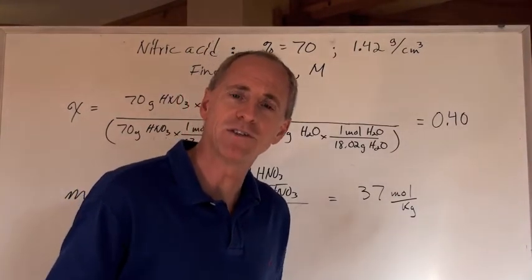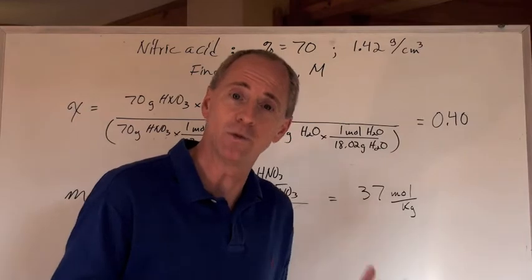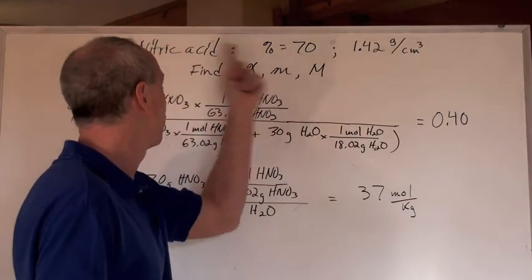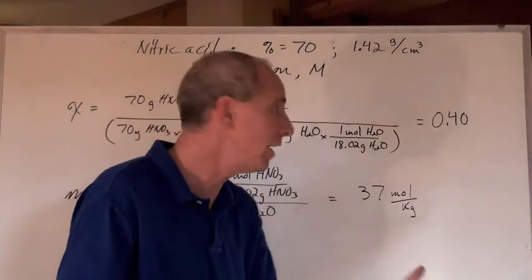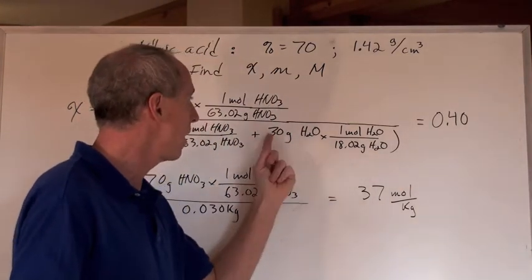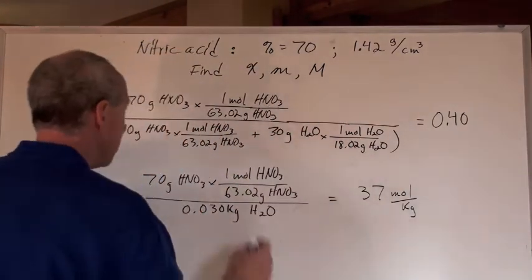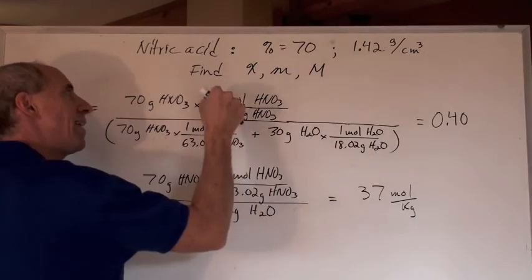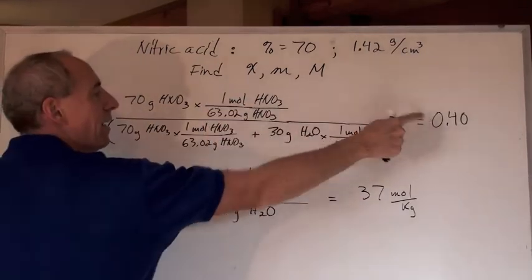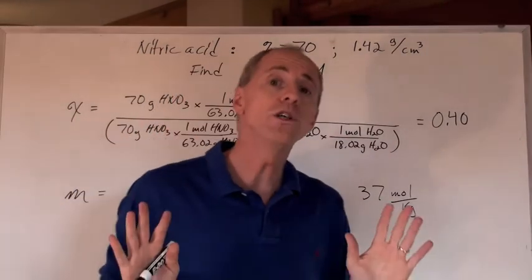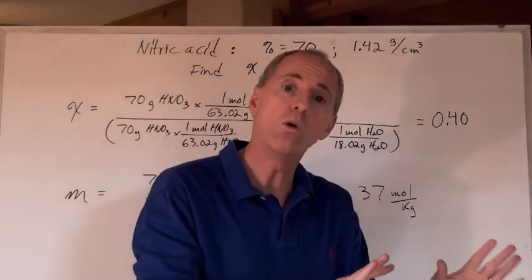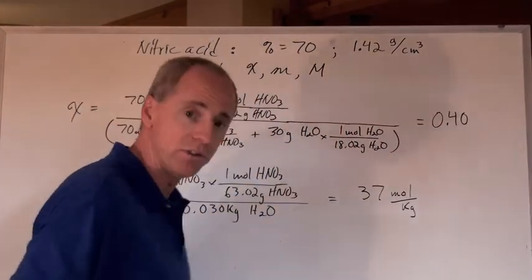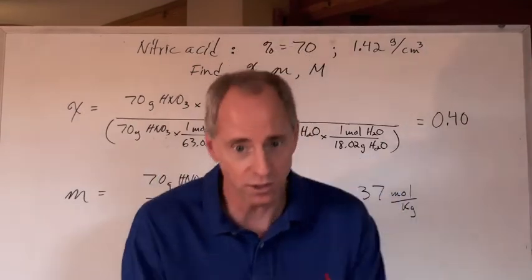What's the solvent? Water. How much of the 100 grams of solution is water? 70 grams is the nitric acid, so the other 30 grams is water. When you do this calculation, doing this math, adding those together, then dividing, you get 0.40 with no unit for mole fraction because all the units cancel out.